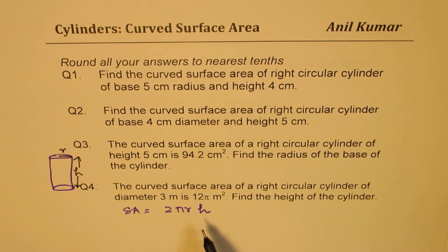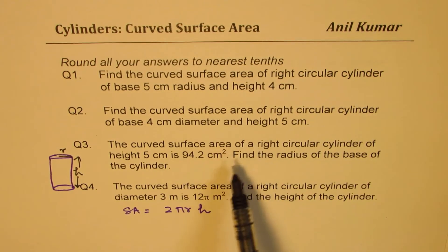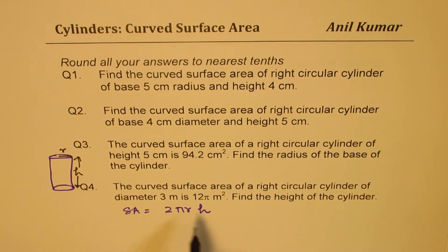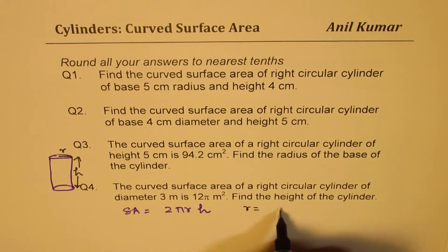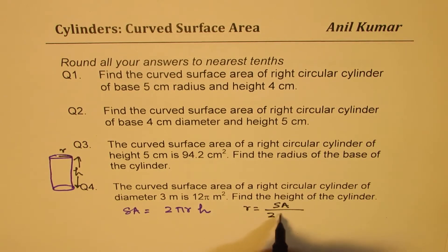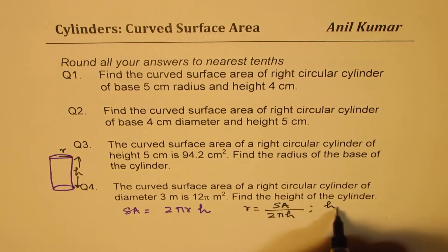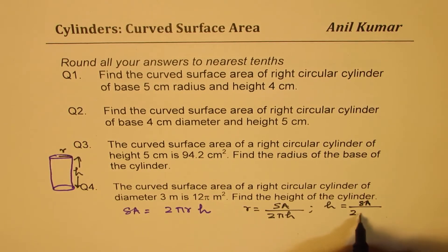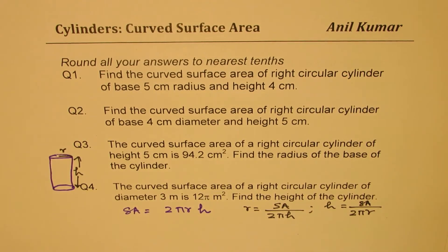Just use a calculator to find these answers. The other two questions are about rearranging the formula. You can write radius as surface area divided by 2πh, and you can also write height as surface area divided by 2πr. That is how you are going to solve all these questions — simple as that.